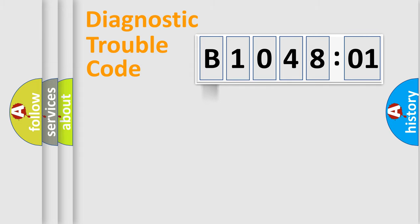Powertrain, Body, Chassis, Network. This distribution is defined in the first character code.